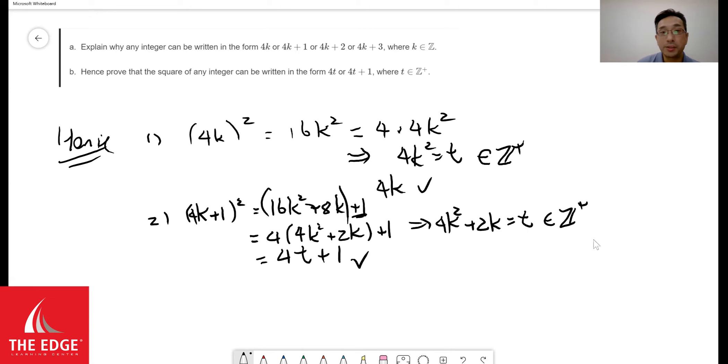All right. So you can see what we need to do next will be the same thing for the rest. And we'll kind of do that very quickly. The next thing we will do would be 4k plus 2 squared, which can be written as 16k squared plus, in this case, 4 times 2, which is 8. So 16k plus 8k and then plus 4,